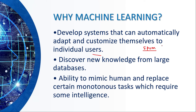Another application: if your interest is science and technology, you see posts related to science and technology when you scroll — that is also machine learning. It determines the input from the user and sets the output accordingly. The second point is that it discovers new knowledge from large databases. It is used in market prediction, taking large amounts of market data to predict future prices — it's used in market analysis and stock market pricing.